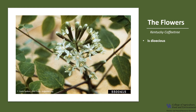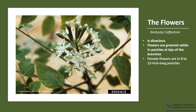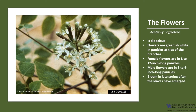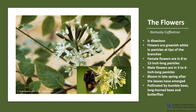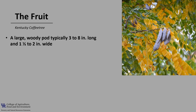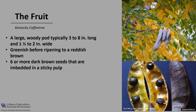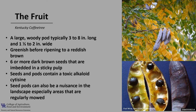Kentucky coffee tree is dioecious, which means there are female trees and there are male trees. The flowers are greenish white in panicles at the tips of branches. The female flowers are in 8 to 12 inch long panicles, and the male flowers are in 3 to 4 inch long panicles. They bloom late in spring after the leaves have emerged and are pollinated by insects including bumble bees, longhorn bees, and butterflies. The fruit is a large woody pod, typically three to eight inches long and about one and a half to two inches wide, greenish before ripening to a reddish brown. Inside the pod there are six or more dark brown seeds embedded in a sticky pulp. The seeds are reputed to contain a toxic alkaloid cytosine, and the pods can remain on the tree throughout the winter.